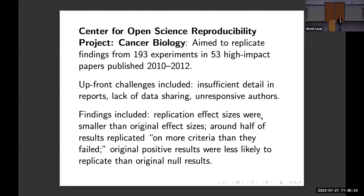They also did a project in cancer biology, aiming to replicate findings from 193 experiments across 53 high-impact papers. They were upfront about the challenges they faced: insufficient detail in reports, researchers not sharing their data even when they claimed they would — they simply wouldn't respond. It was hard to even do the replication study because there wasn't enough information. Here too, replication effect sizes were smaller, only about half the results replicated, and original positive results were less likely to replicate than original null results.